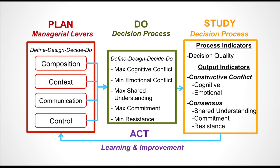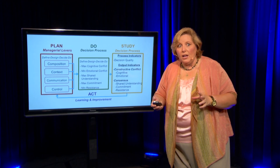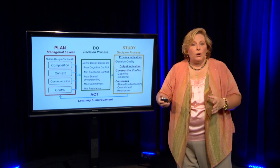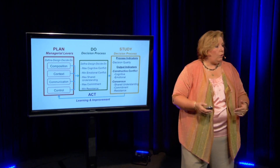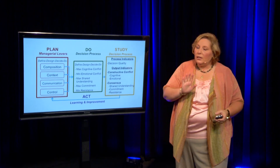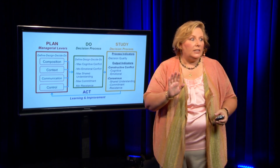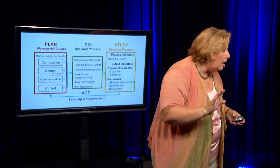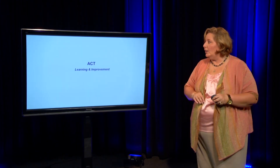We've already spent some time looking at context, composition, communication, and control. Those are very important and continue to stay with us throughout this entire process. What we're going to do now is take our scenario and move our lessons learned forward. We went through two components: looking at the process indicators and the output indicators. A little warning: output indicators is not the same as outcome indicators. So let's move forward through the acting and learning of improvement.